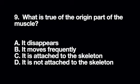What is true of the origin part of the muscle? A. It disappears B. It moves frequently C. It is attached to the skeleton D. It is not attached to the skeleton